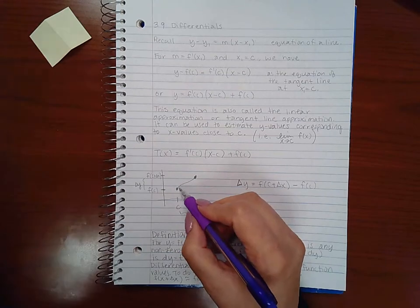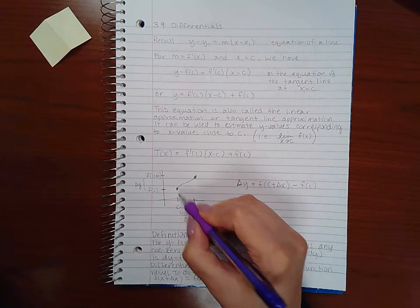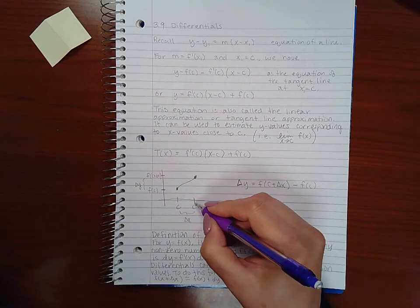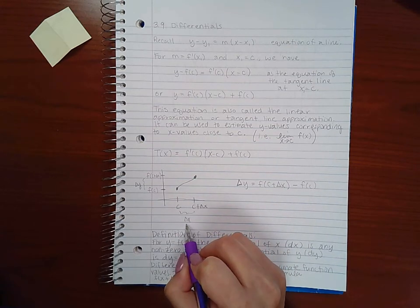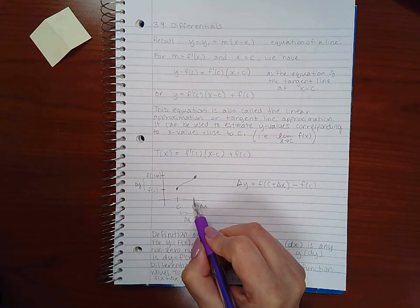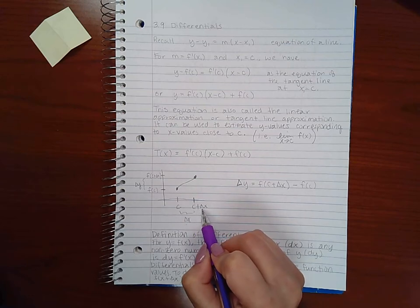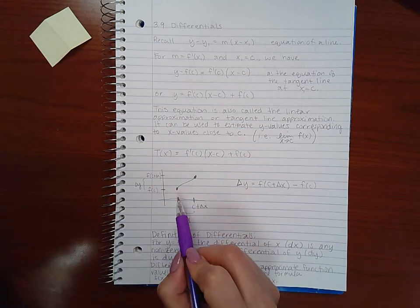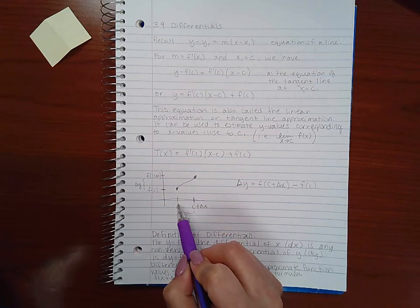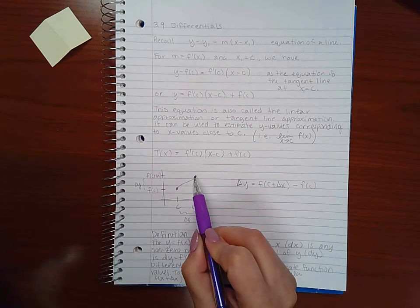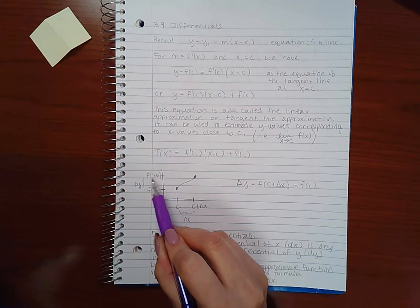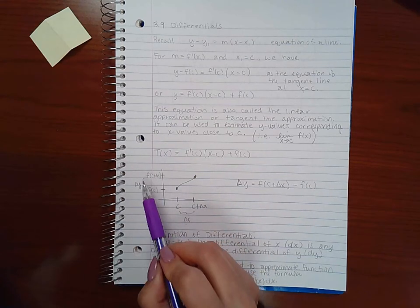So another way to do this is if you have a curve here and it has a point c and it has another point some distance away from c, say that delta distance is delta x. Then this new x value would be c plus that measurement delta x. The y value associated with this x value would be f of c, and the y value associated with that new x value would be f of c plus delta x.